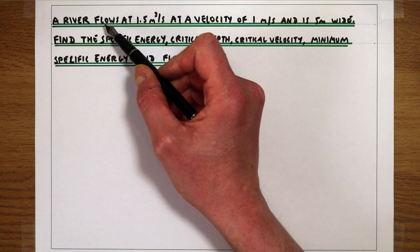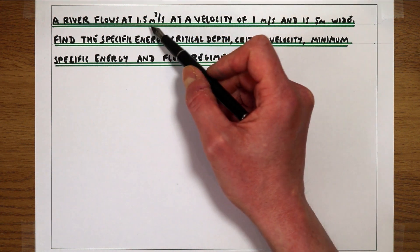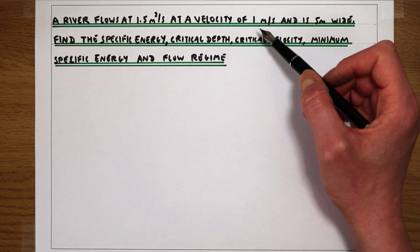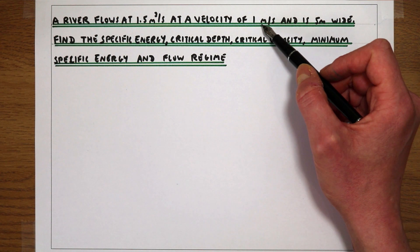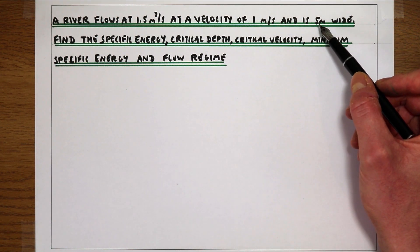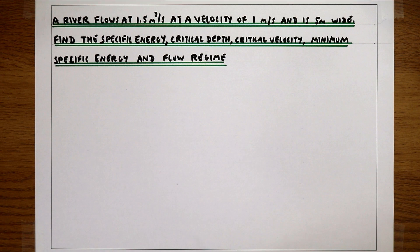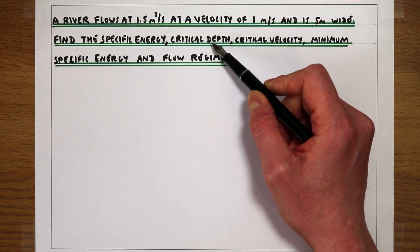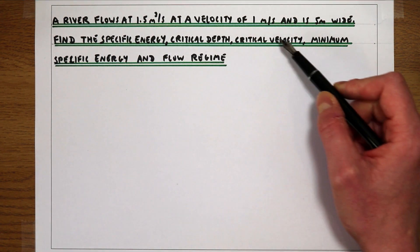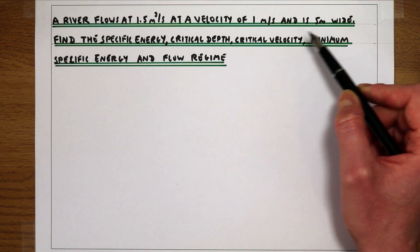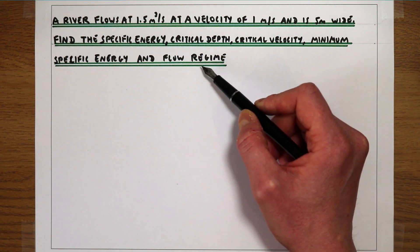In this video we have a river that's flowing at 1.5 metres cubed per second at a velocity of 1 metre per second, and the channel is 5 metres wide. We're trying to find the specific energy of the flow, the critical depth, the critical velocity, the minimum specific energy, and the flow regime.